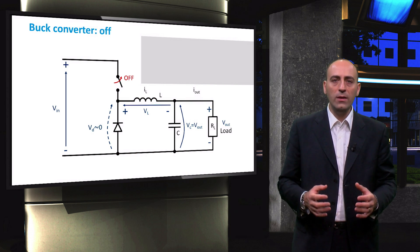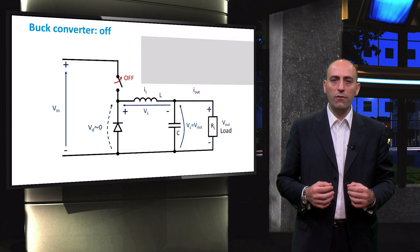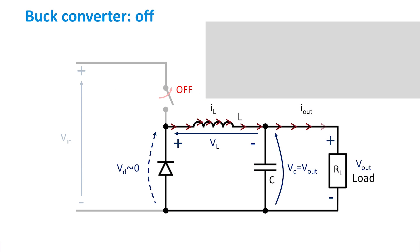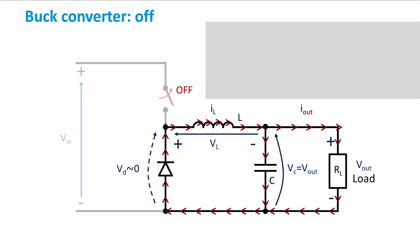When the switch is off, the current flows only in the remaining part of the circuit. The energy that has been stored in the coil as a magnetic field will drive the current towards the resistive load with the help of the flyback diode.